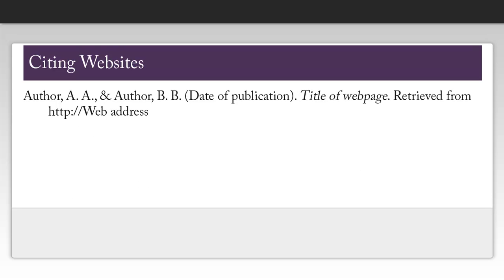The last citation example we're going to look at is for a website. This is probably the hardest type of citation to create because a lot of the information can be hard to find if it exists at all. It's important to keep in mind that if you can't find this information, it's hard to validate that you are, in fact, using a reliable source. What you want to look for is the name of the author or authors, the date that the information on the page was published, the title of the page you are actually on unless you're citing the entire website, and finally the link for the page.